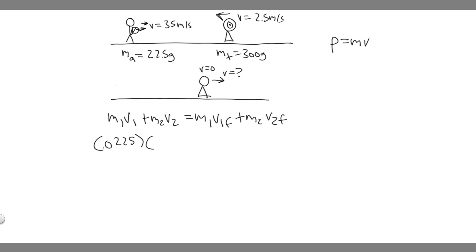v1 is the speed of the arrow when shot which is 35 because this is before. m2 is the mass of the target which is 300 grams, which is the same thing as 0.3 kilograms.